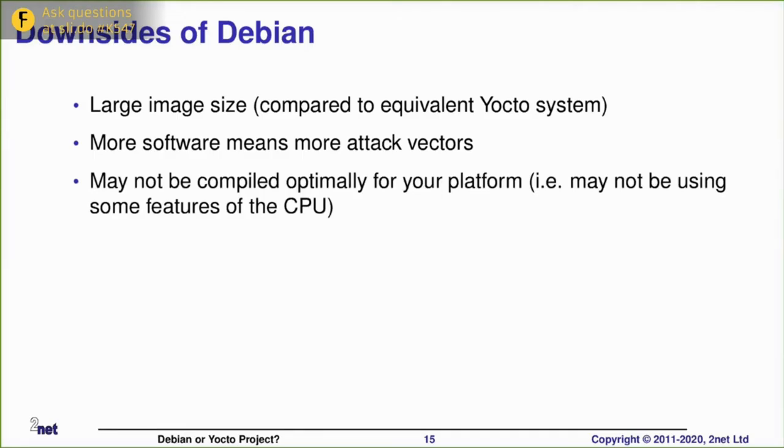Also, the distro repositories, although they do support typically ARM processors and various other CPU architectures, they usually use a common denominator approach. For example, with Raspbian we just looked at, that is compiled for ARMv6 for compatibility reasons with the Raspberry Pi 1. But it does mean that if you're using the OS exactly as it is, it's not taking advantage of the instruction sets of the later versions of the Raspberry Pis. It's just using the subset that is compatible with ARMv6.